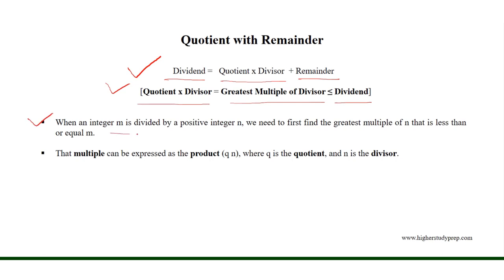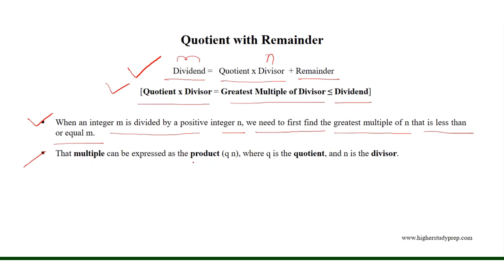When an integer m is divided by a positive integer n, therefore the dividend is m and the divisor is n. We need to first find the greatest multiple of n that is less than or equal to m. That multiple can be expressed as the product q times n, where q is the quotient and n is the divisor.